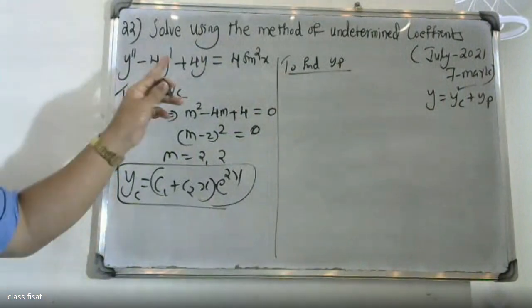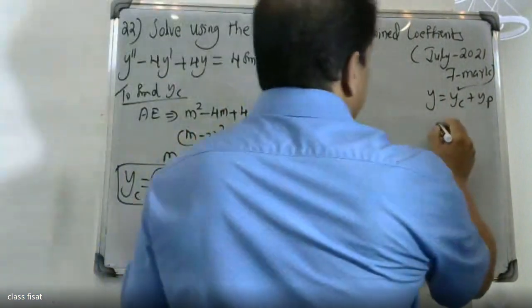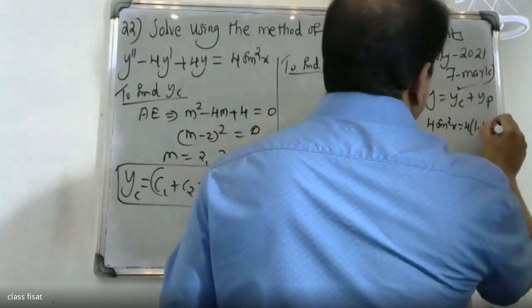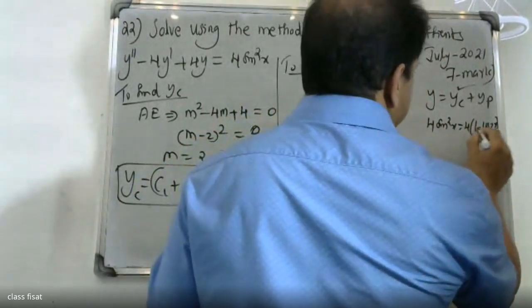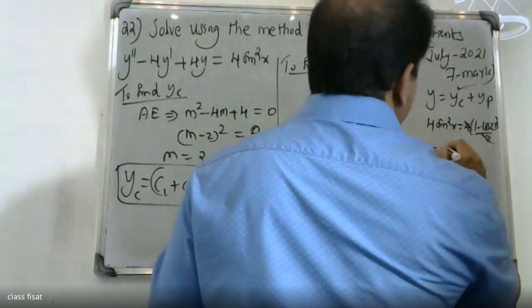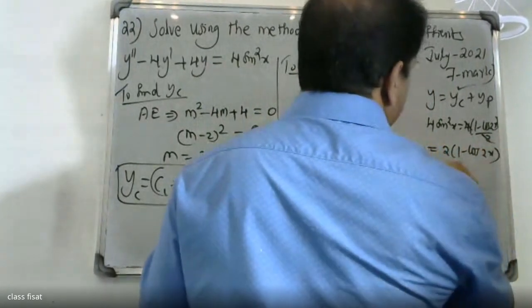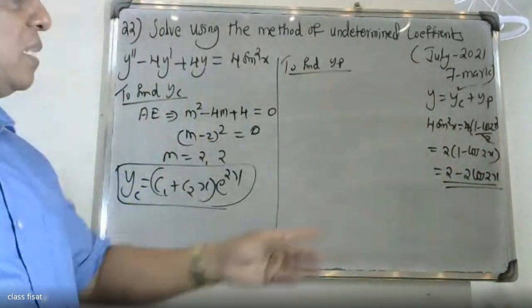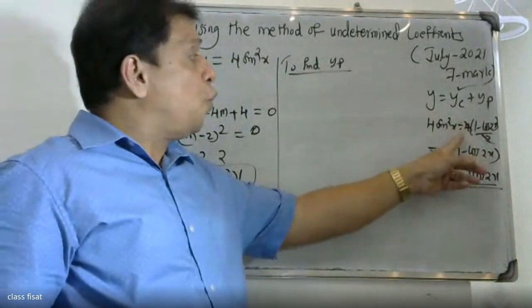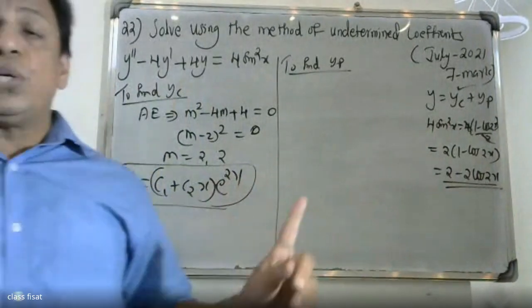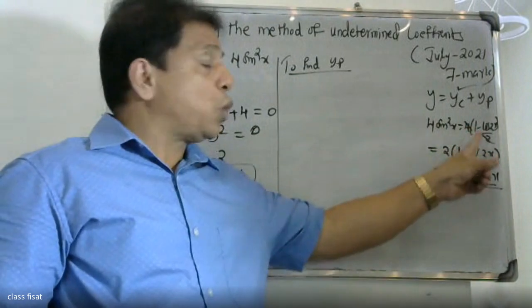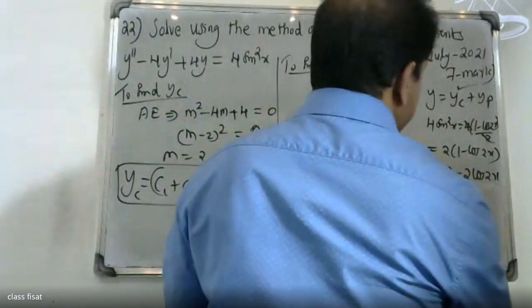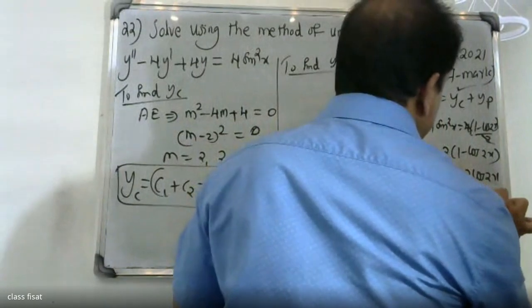To find yp, the right-hand side is 4sin²x. We convert using the identity: 4sin²x = 4·(1 - cos2x)/2 = 2(1 - cos2x) = 2 - 2cos2x.